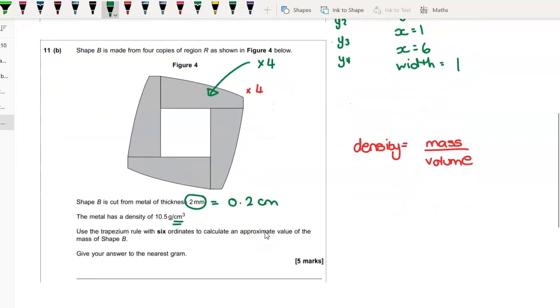All distance is measured in centimeters, so our units are consistent. You're going to use your trapezium rule to find that area - if you can't remember how to use trapezium rule, look back in your book - and then times it by four and times it by 0.2. That will give you your volume.